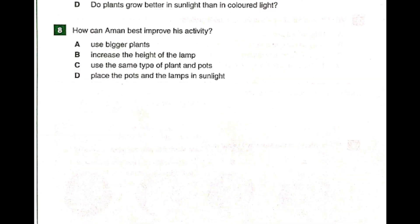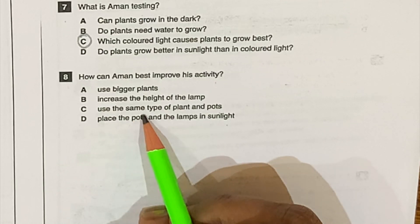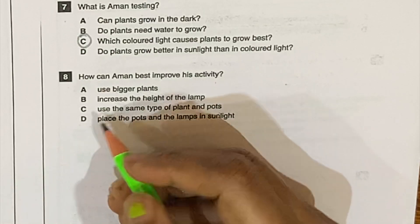Question number eight. How can Aman best improve his activity? A. Use bigger plants. B. Increase the height of the lamps. C. Use the same type of plants and pots. D. Place the pots and the lamps in sunlight. The answer is C: use the same type of plants and pots.